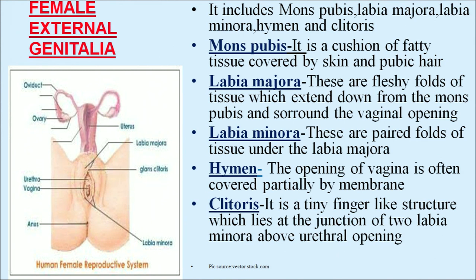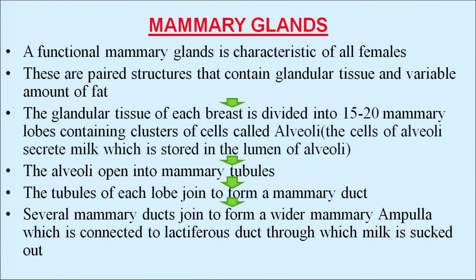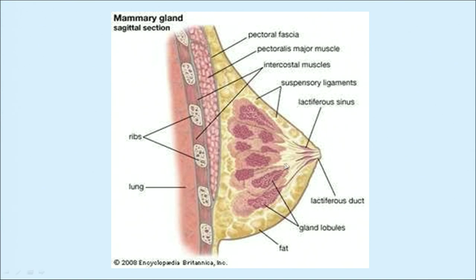A functional mammary gland is characteristic of all females. These are paired structures containing glandular tissue and a variable amount of fat. The glandular tissue of each breast is divided into 15 to 20 mammary lobes, which contain clusters of cells called alveoli. The cells of the alveoli secrete milk, which is stored in the lumen of the alveoli. The alveoli open into mammary tubules, which join to form mammary ducts, and several ducts join to form a wider mammary ampulla connected to the lactiferous duct through which milk is sucked out.